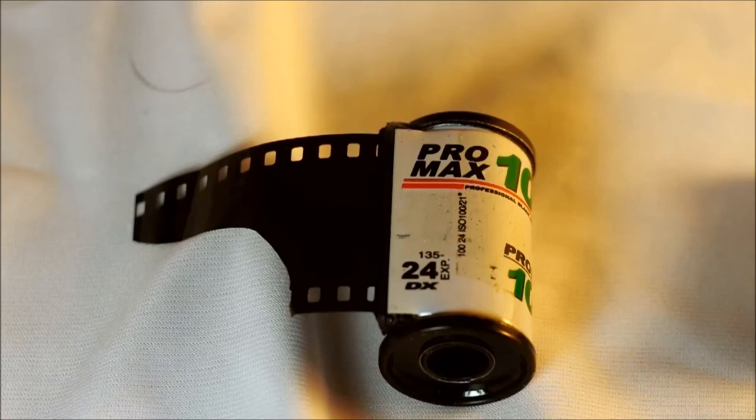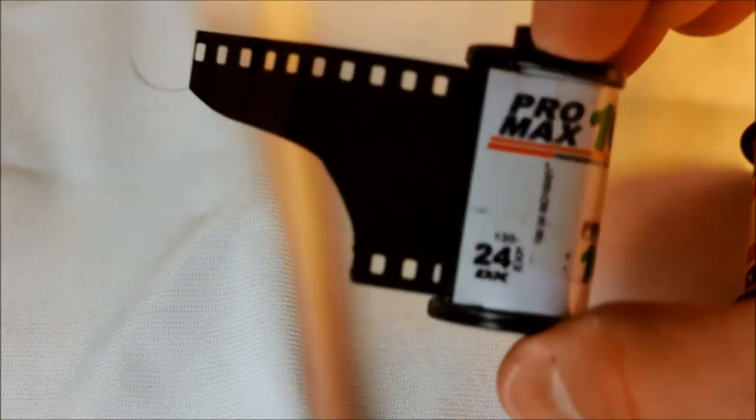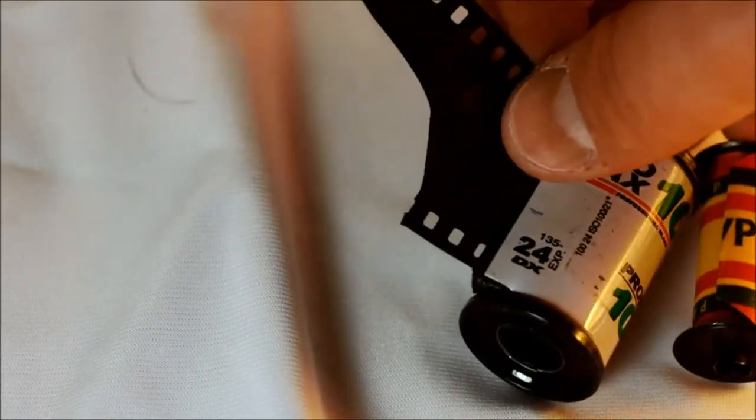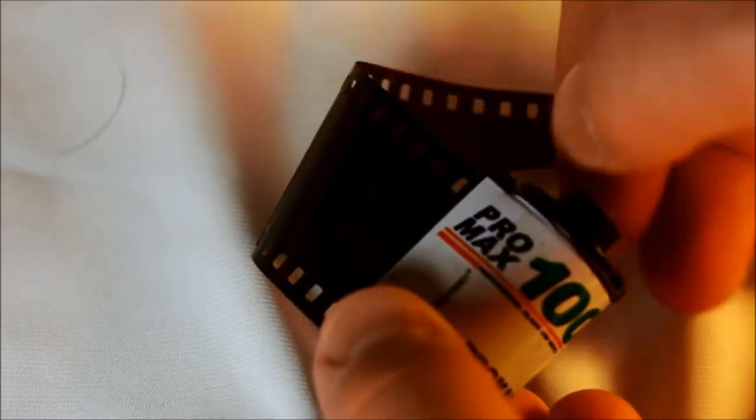First one we're going to look at: this is the standard 35 millimeter film cassette. You can recognize it because it's in a cassette like this and it has film that winds out of it and is pulled back in by the camera, and the film has perforations along the edges.